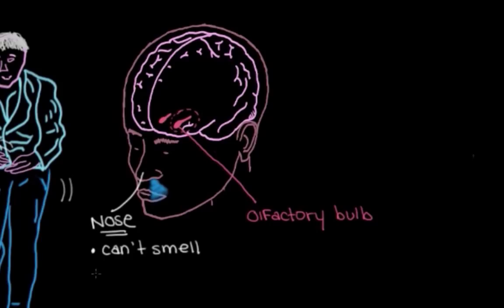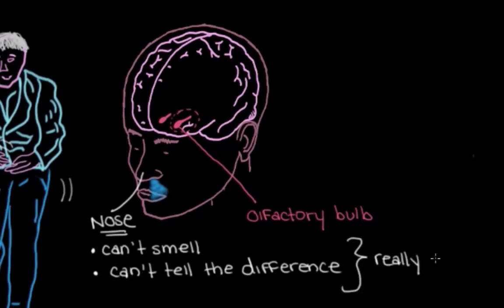Or instead of not being able to actually smell, they might have trouble deciding the difference between two different smells. So these problems with smell are actually really common in Parkinson's disease, and they can actually be one of the first things that goes wrong, sometimes before even those movement problems that we think about when we think of the disease.